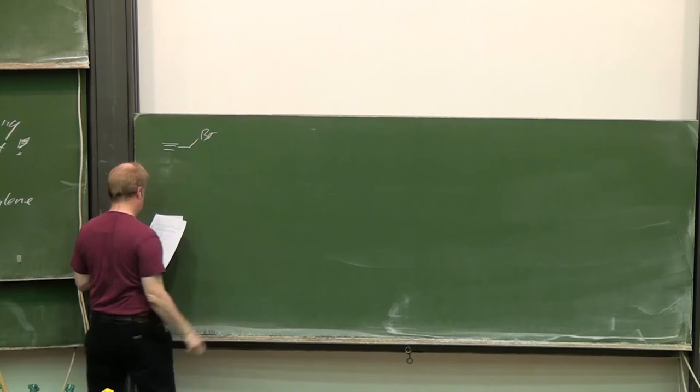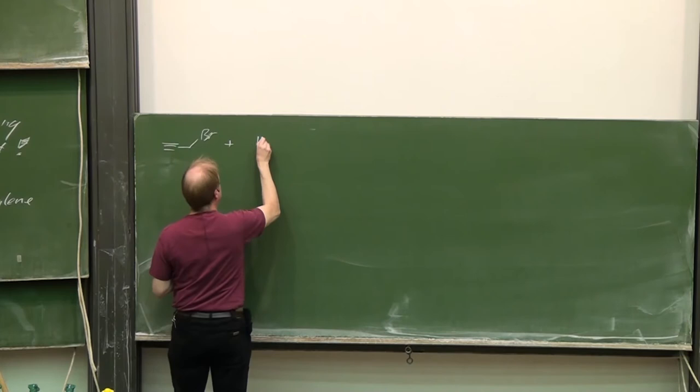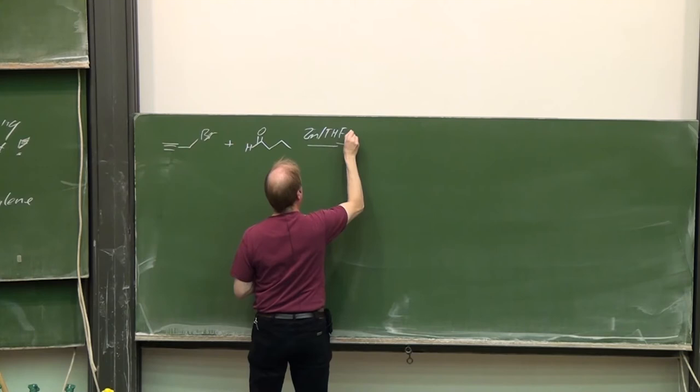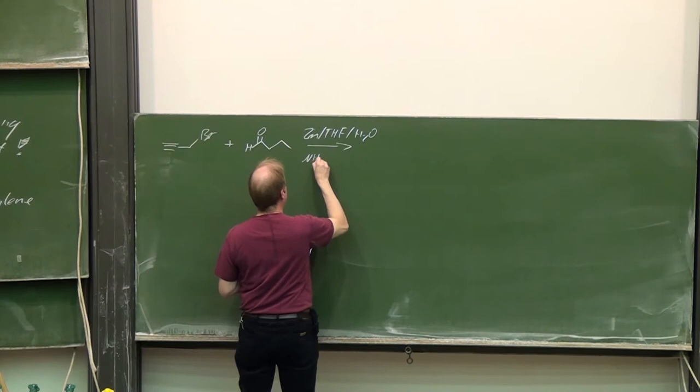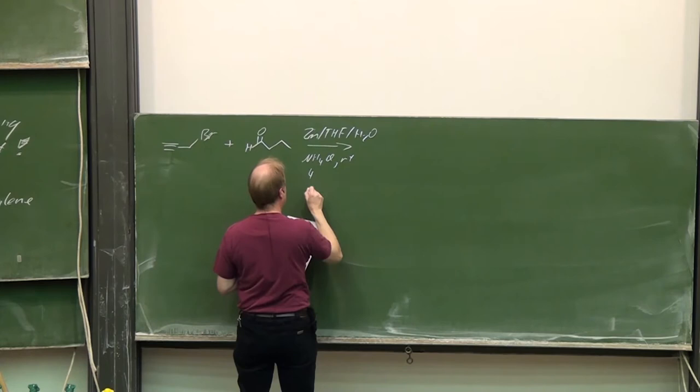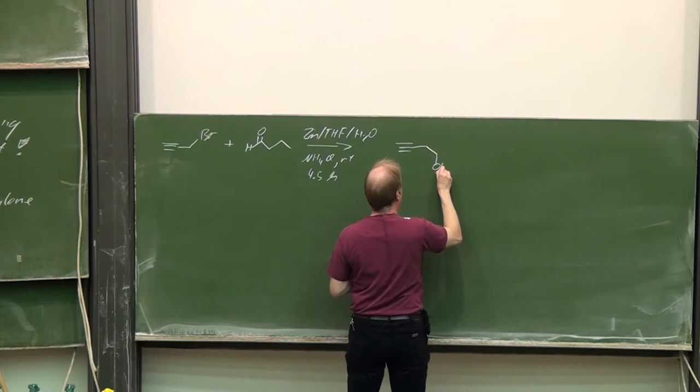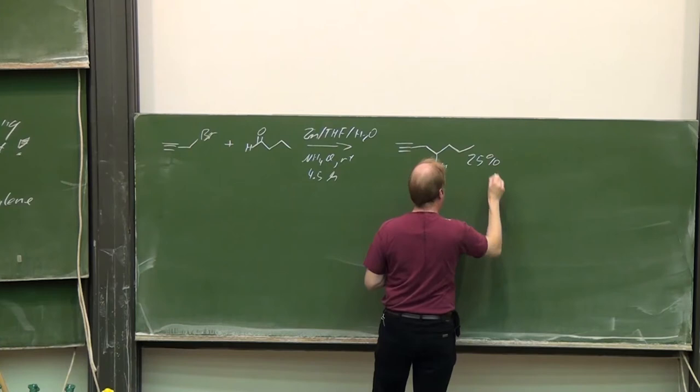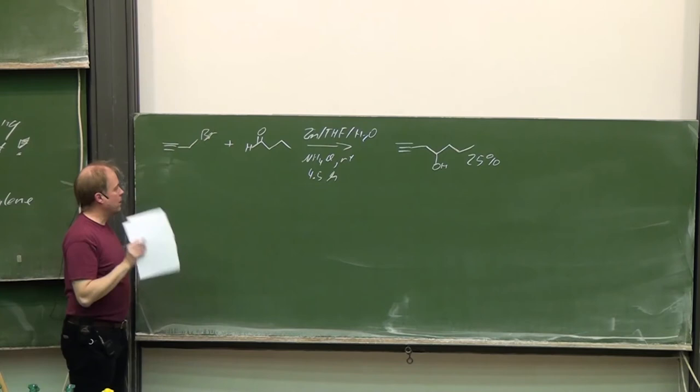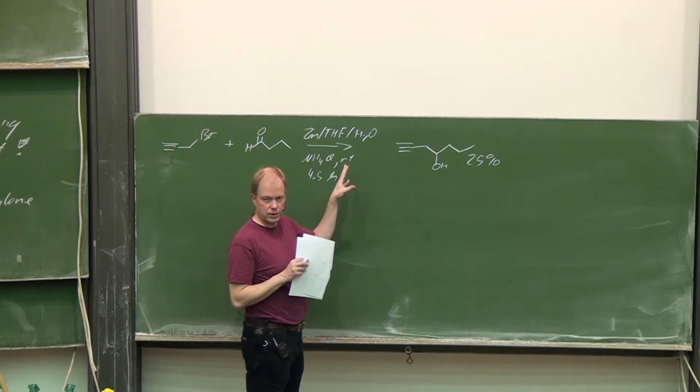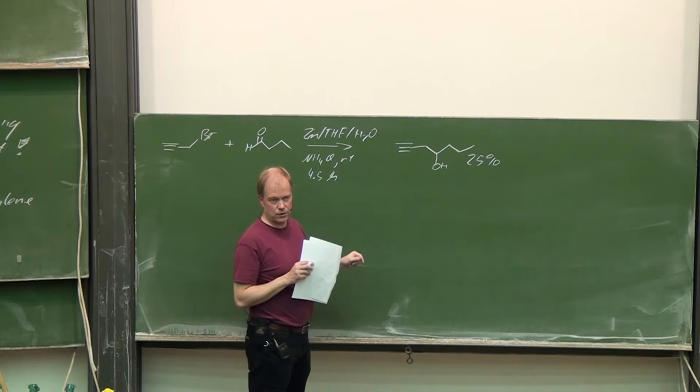As I mentioned earlier, first attempts from Barbier were with zinc. Zinc has also been tested in modern times. Zinc, THF, and water combination with ammonium chloride, room temperature, 4.5 hours reaction time: 25% yield. It is a remarkable reaction because it's organometallic chemistry with an aqueous solvent. Can't do that with magnesium. The yield is obviously not satisfying.